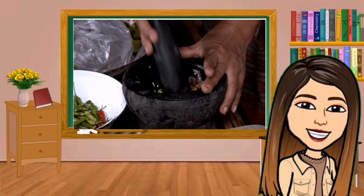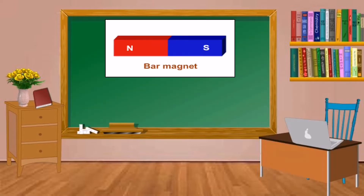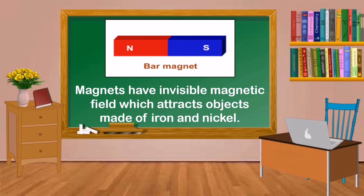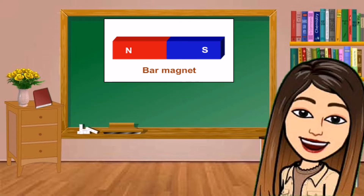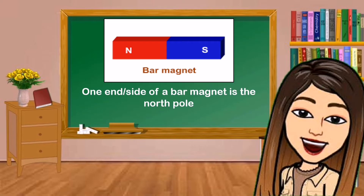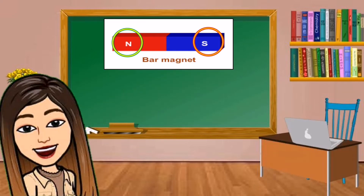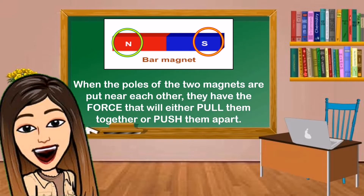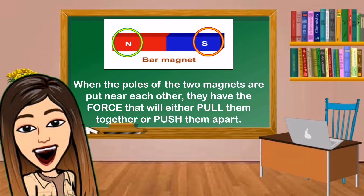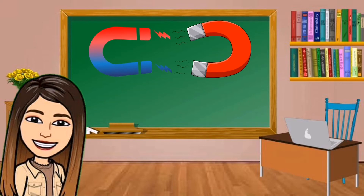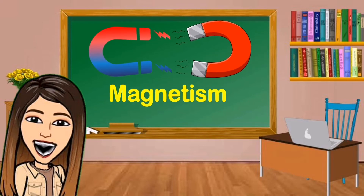Have you seen a magnet? What can you say about it? Magnets have an invisible magnetic field which attracts objects made of iron and nickel. One end or side of a magnet is the north pole and the opposite is the south pole. When the poles of two magnets are put near each other, they have a force that will either pull them together or push them apart. This push and pull of a magnet is called magnetism.